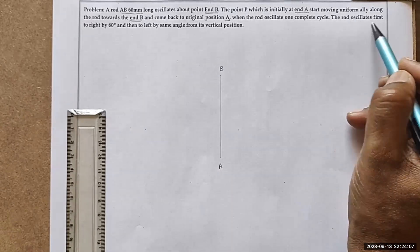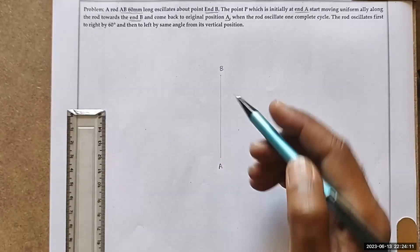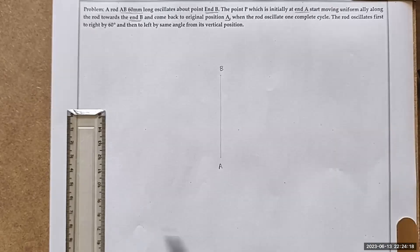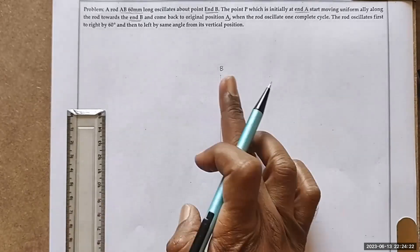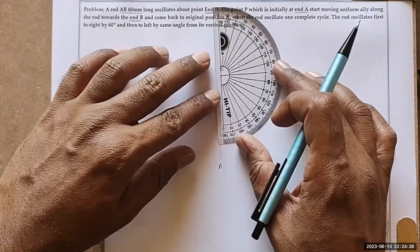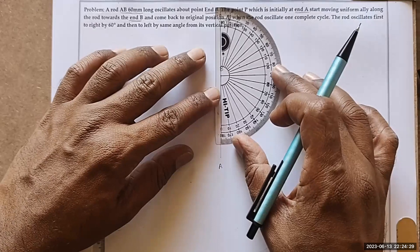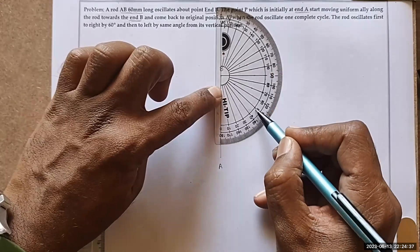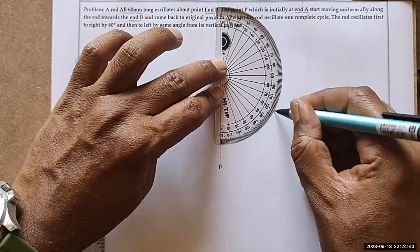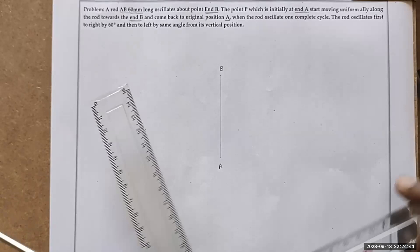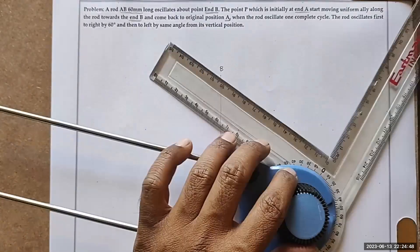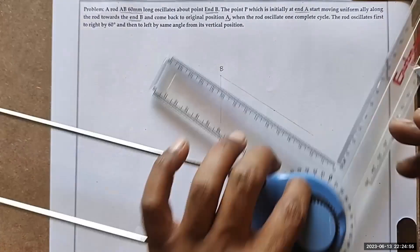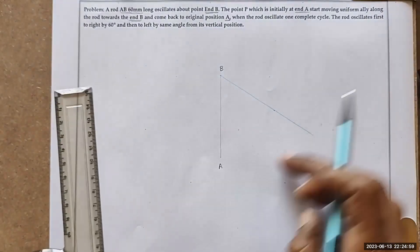The rod is oscillating first towards the right. The rod's vertical position is this; from the vertical position, it oscillates towards the right by 60 degrees. So we place the protractor with zero matching at point A and count the angle vertically: 10, 20, 30, 40, 50, 60 — this is 60 degrees towards the right. We draw a construction line for the extreme right position of the rod when it swings or oscillates towards the right.